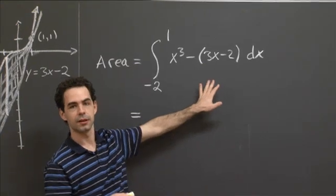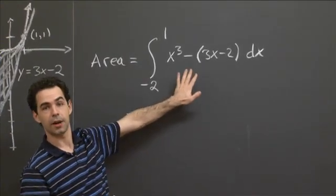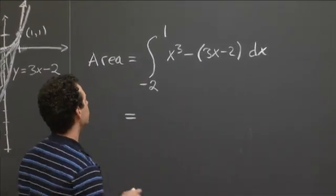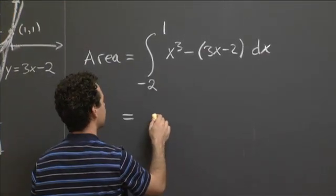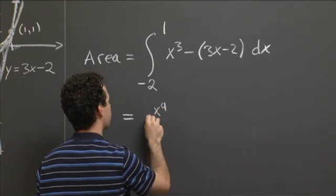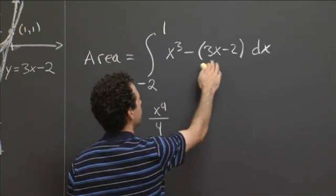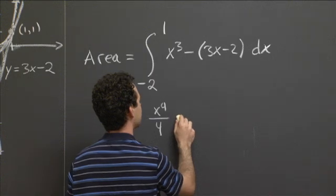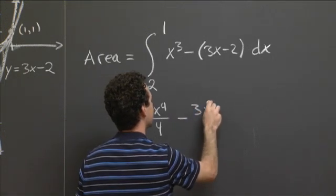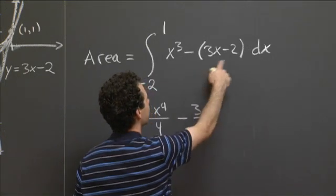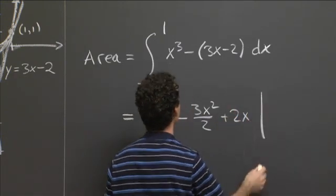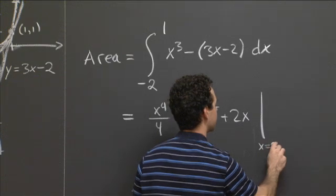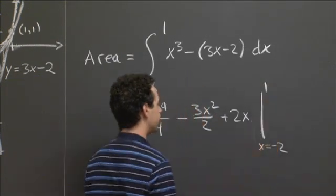Okay? And so now, okay, well, now this is pretty straightforward. We're integrating a polynomial at this point. So this is the integral. Well, okay, so integrating x cubed, that gives me x to the fourth over 4. Integrating minus 3x gives me minus 3x squared over 2. And integrating plus 2 gives me plus 2x between x equals minus 2 and 1. So okay, so now I just do this difference.